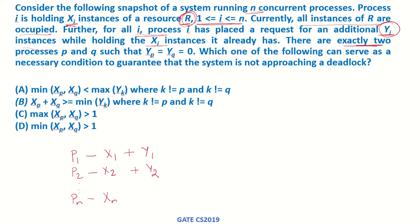There are exactly two processes p and q such that yp equals yq equals 0. That means process p and process q already had xp and xq instances of r and they are not requiring any more instances of r. That means their yk is 0, so yp equals yq equals 0. Which one of the following can serve as a necessary condition to guarantee that the system is not approaching a deadlock?